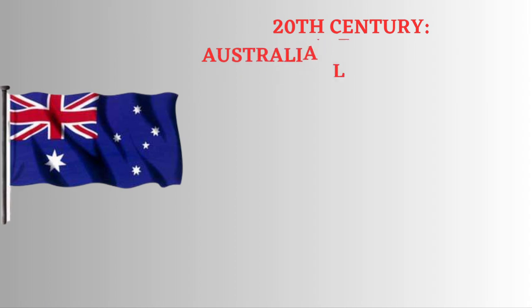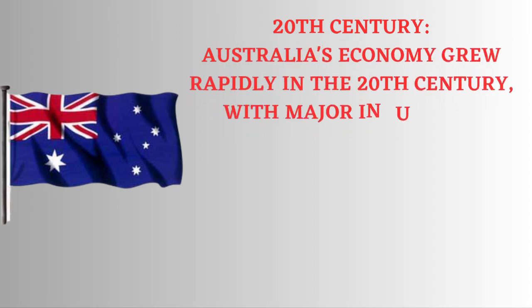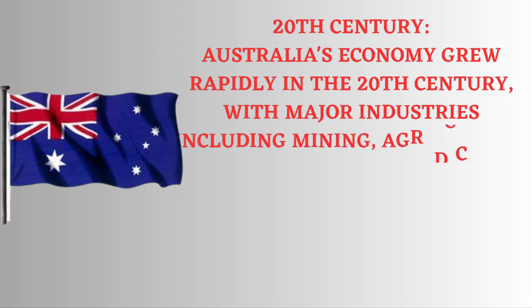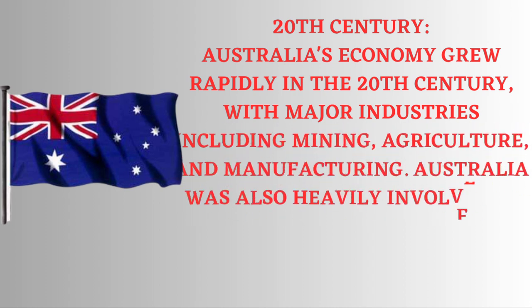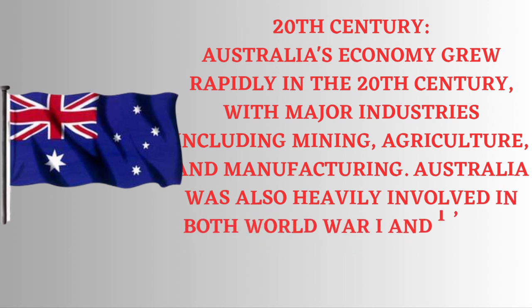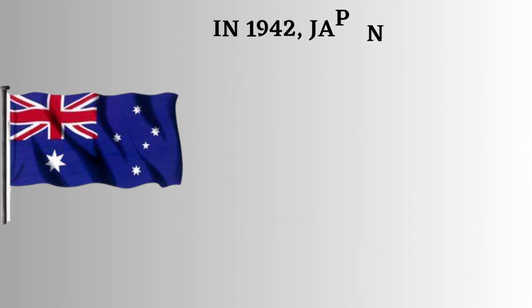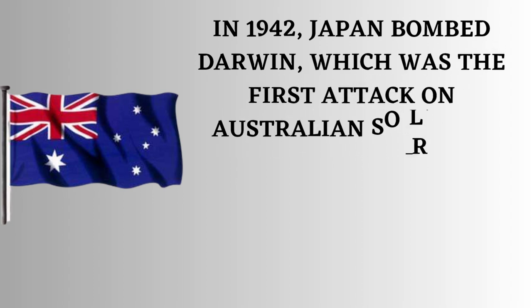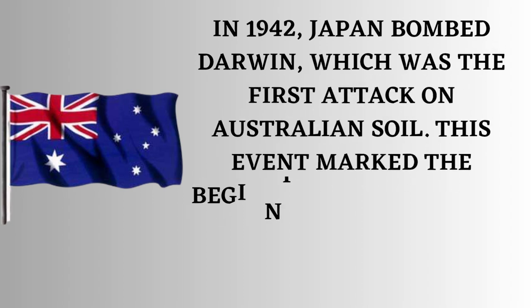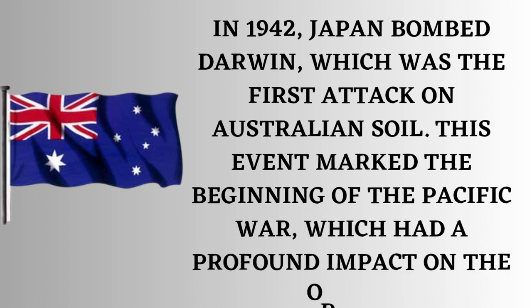20th Century: Australia's economy grew rapidly in the 20th century, with major industries including mining, agriculture, and manufacturing. Australia was also heavily involved in both World War I and II, with significant contributions to the Allied war effort. In 1942, Japan bombed Darwin, which was the first attack on Australian soil. This event marked the beginning of the Pacific War, which had a profound impact on the country.